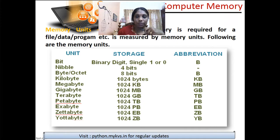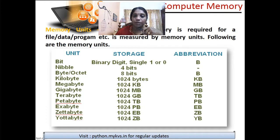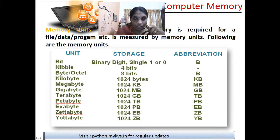Memory units are how we identify a particular amount of data in the computer. A file, an image, a program, audio, or video — everything is measured in memory units. The unit of measurement in a computer starts with a bit, which is binary: a single one or a single zero. The abbreviation is 'b' — capital or lowercase, both are acceptable. Four bits is called a nibble, and eight bits is called a byte.